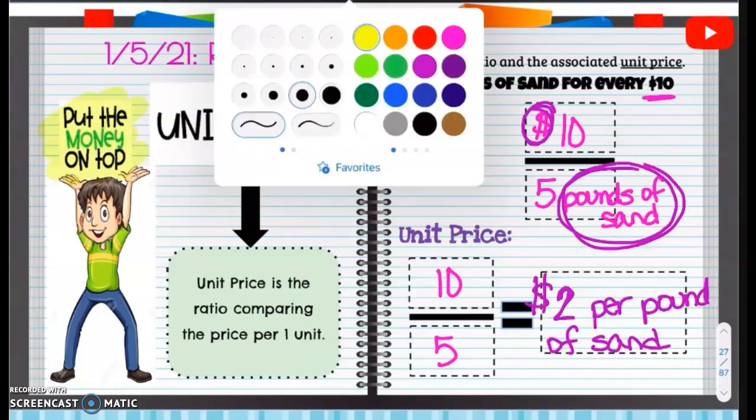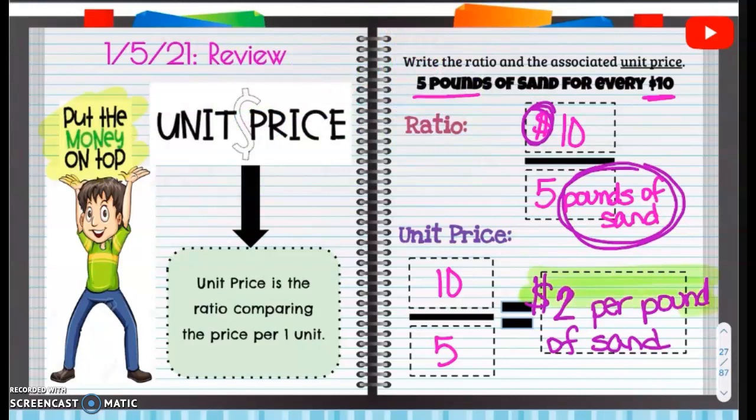And that is going to be our final answer. I will highlight it here. So $2 per pound of sand. And that's it. All we did to get that was divide.